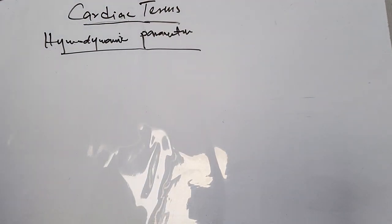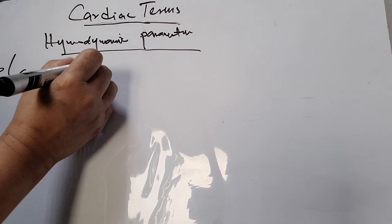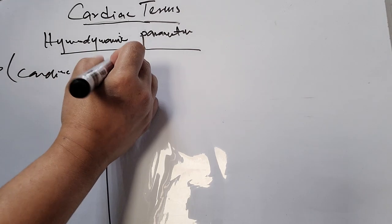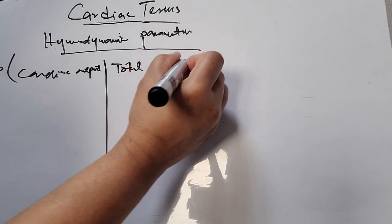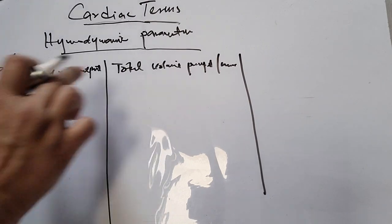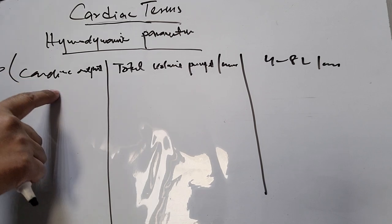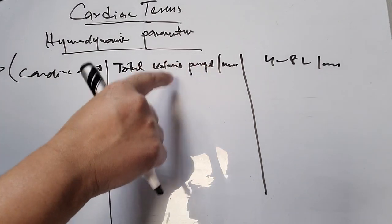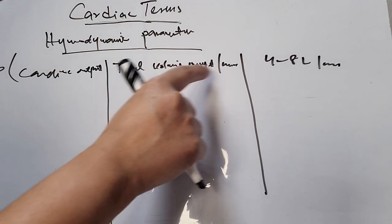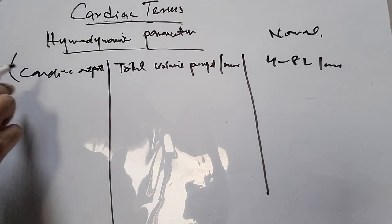So what are hemodynamic parameters? First is CO — cardiac output. What is cardiac output? Total volume pumped per minute. The normal value is 4 to 8 liters per minute. So cardiac output means the total volume the heart pumps per minute, and the normal range is 4 to 8 liters per minute.